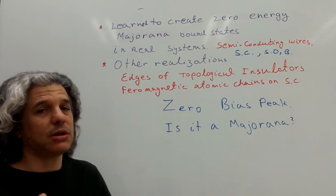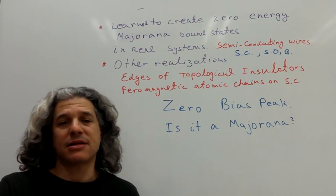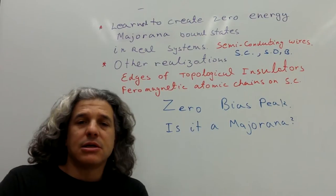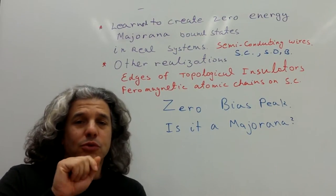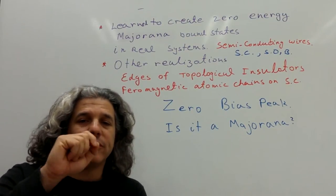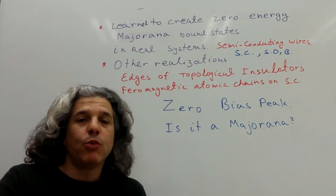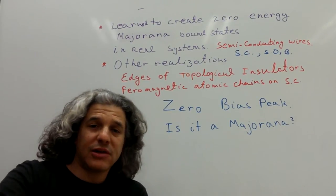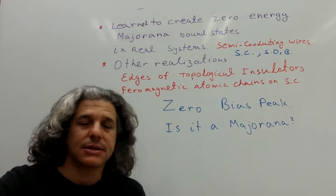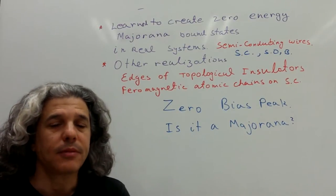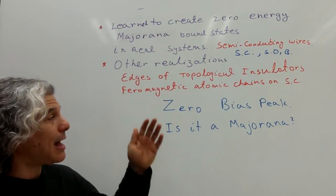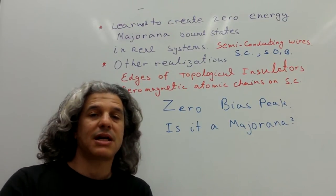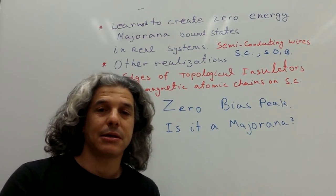We expect to see these Majoranas as zero energy states. So when we measure the conductance through the Majoranas from a normal metal to the superconductor, we expect to see a zero bias peak at zero energy — a zero bias peak in the conductance. And in fact, this is what experiments observe: a zero bias peak in the system.